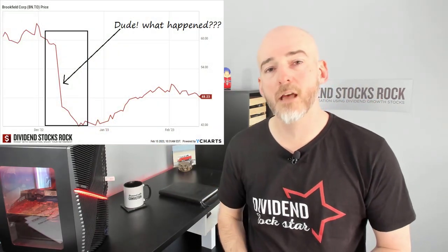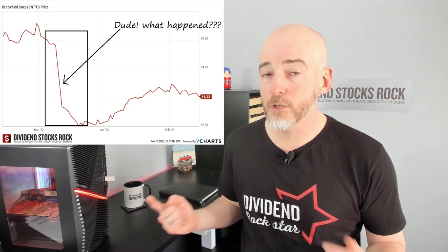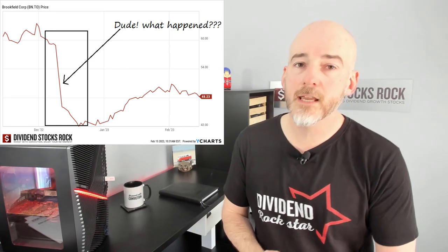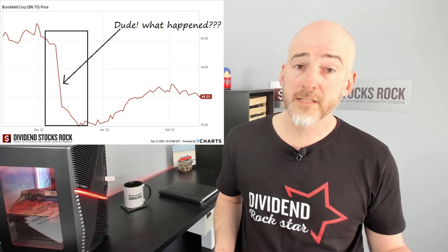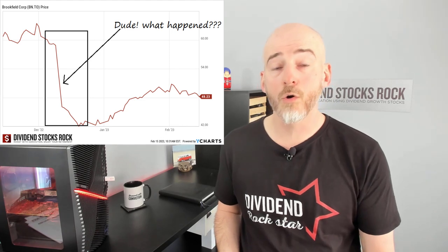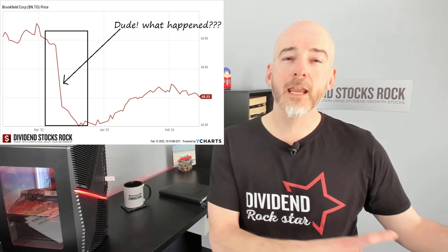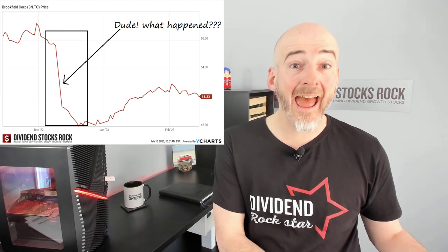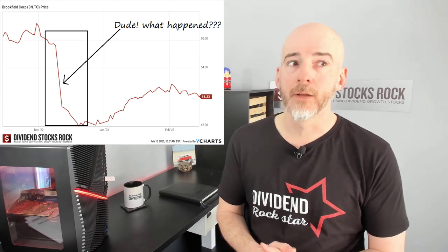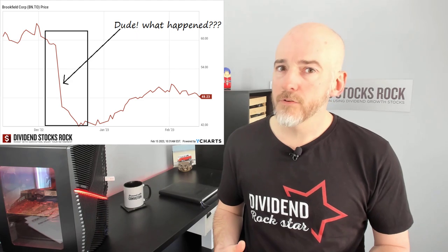If you look at Brookfield Corporation's chart in December, it dropped like a rock. Was there bad news? Actually, it was good news. Now you have shares of Brookfield Corporation — the symbol is either BN.TO or BN on the New York Stock Exchange. But that was originally Brookfield Asset Management, which was BAM.A. Now BAM is a whole new company, so it's kind of confusing already.